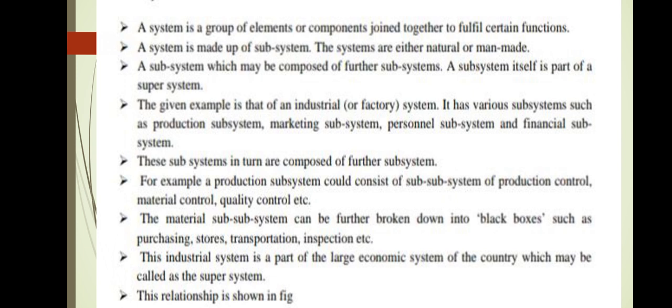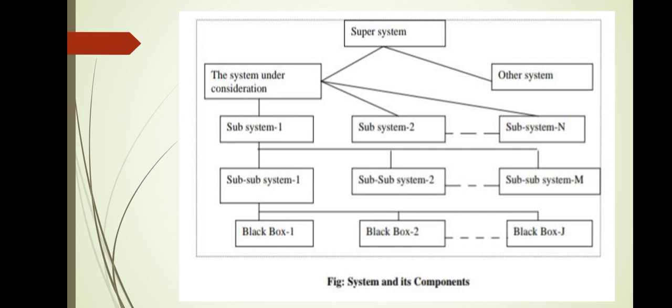The material subsystem can be further broken down into black boxes such as purchasing, stores, transportation, and inspection subsystems. The industrial system is a part of the larger economic system of the country, which may be called the super system. In the diagram, the super system is the industrial system; the subsystems are the production system, financial system, etc. The production system has purchasing, stores, and manufacturing, and purchasing further has inventory systems.